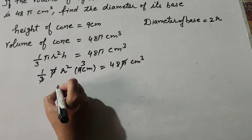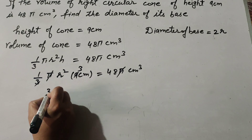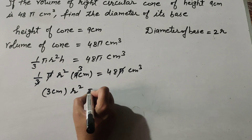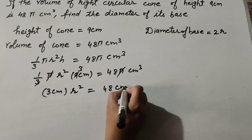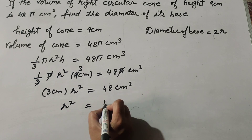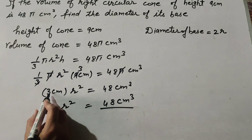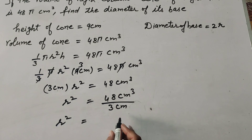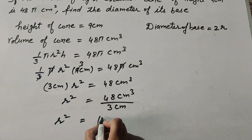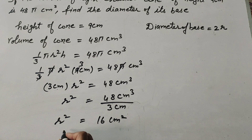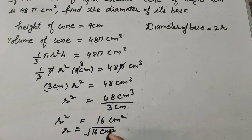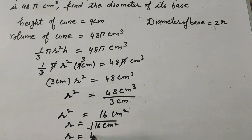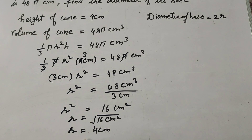Since 3 and 9 are both divisible by 3, we cancel them, giving us 3r² = 48. So r² = 48 ÷ 3 = 16 centimeter square. Therefore r = √16 = 4 centimeters. So the radius is equal to 4 centimeters.